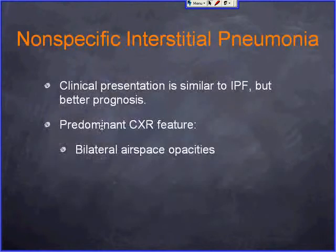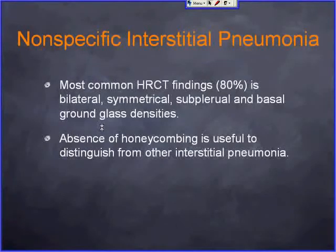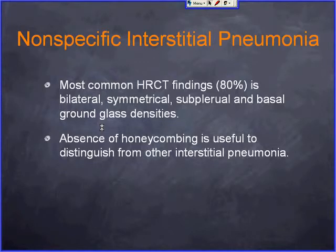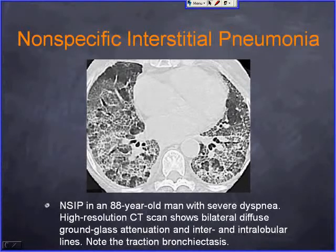Non-specific interstitial pneumonia — previously lumped with UIP — was separated because of better prognosis. Chest X-ray shows bilateral airspace opacities. Differentiation from IPF: very few honeycombing areas, and the most common finding is ground glass opacity rather than interlobular septal thickening and the subpleural basal pattern seen in IPF. An 80-year-old with severe dyspnea shows bilateral basal confluent ground glass attenuation with inter- and intralobular lines and some areas of bronchiectasis.